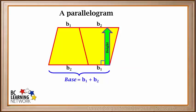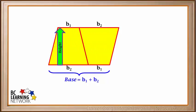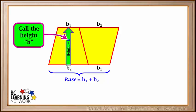The height of this parallelogram is shown by the green arrow, which is at right angles to the base and measures the distance from the base to the top. The height can be measured anywhere here. We'll set the arrow here for now. We call the height H.